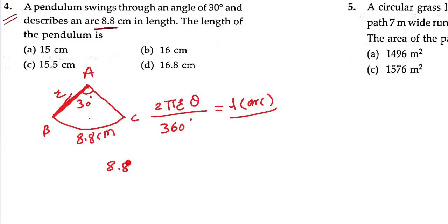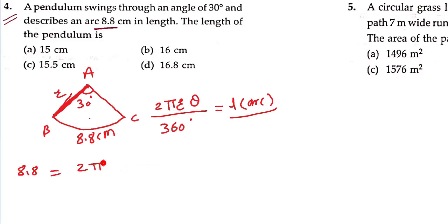The arc length is given as 8.8 cm. So 8.8 = 2π × r × 30 / 360.